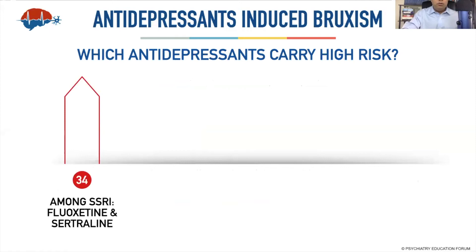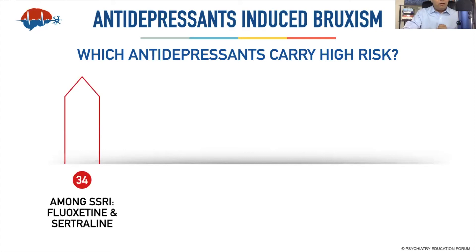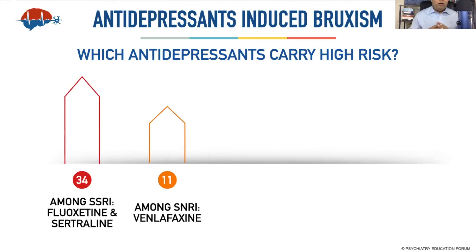Of those 46 case reports, 34 were related to SSRIs — selective serotonin reuptake inhibitors. Fluoxetine ranked first, followed by sertraline. I noted in the paper that fluoxetine is likely ranked highest because it was the oldest antidepressant, the first to come to market. Overall, fluoxetine, sertraline, and escitalopram were very high, and I was able to find almost every SSRI causing bruxism as a side effect.